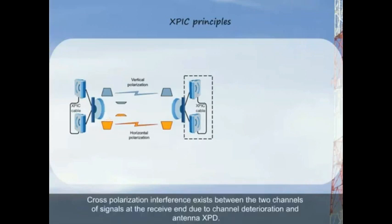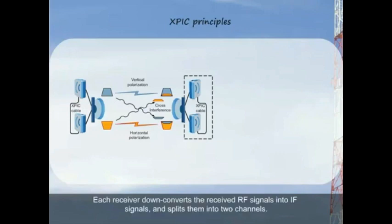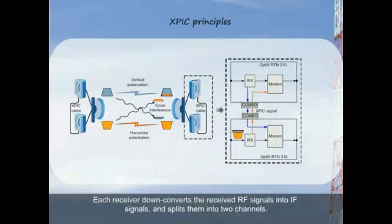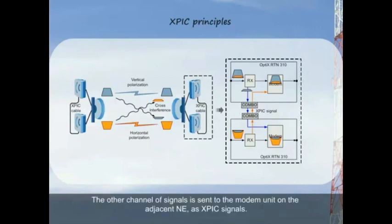Cross-polarization interference exists between the two channels of signals at the receive end due to channel deterioration and antenna XPD. Each receiver down converts the received RF signals into IF signals and splits them into two channels. One channel of signals is sent to the modem unit of the local NE. The other channel of signals is sent to the modem unit of the adjacent NE as XPIC signals.